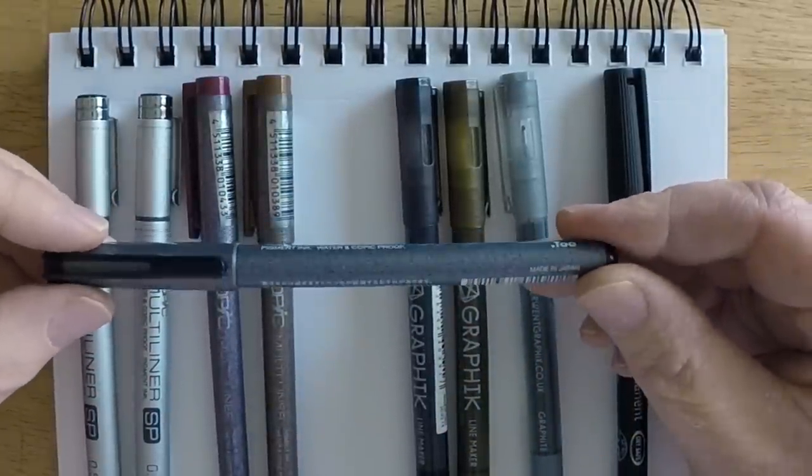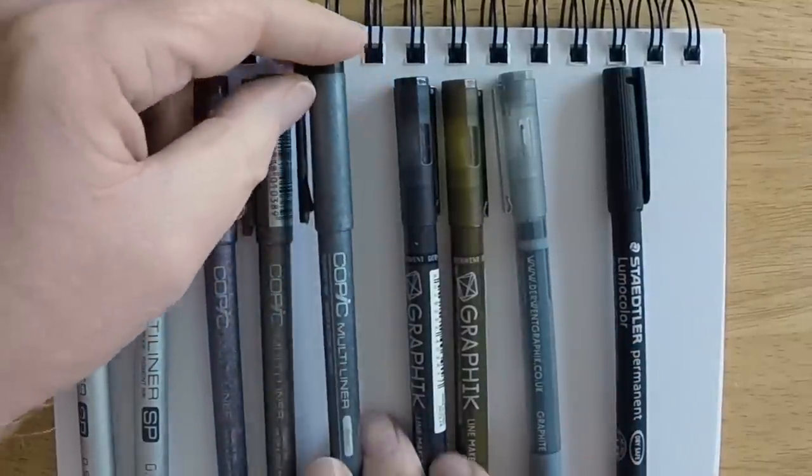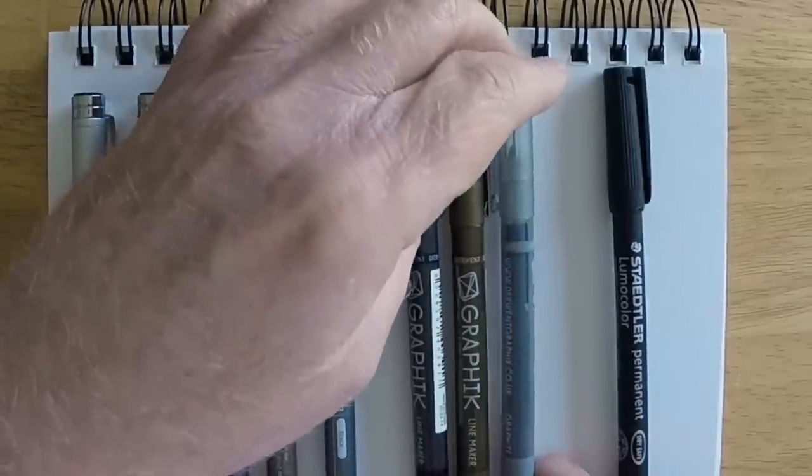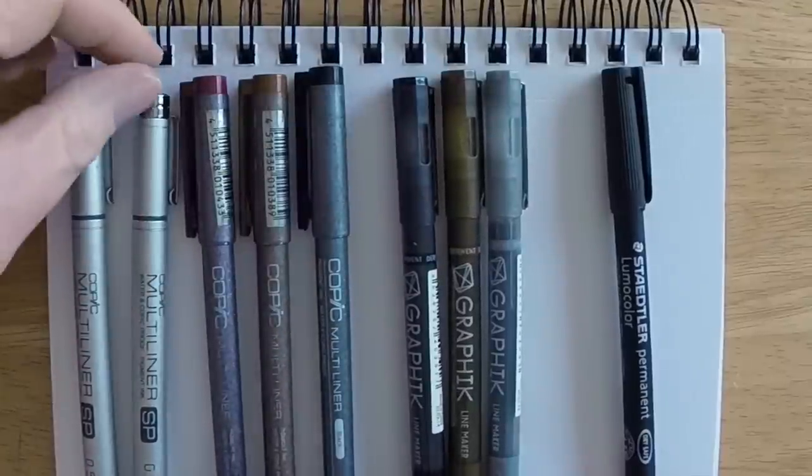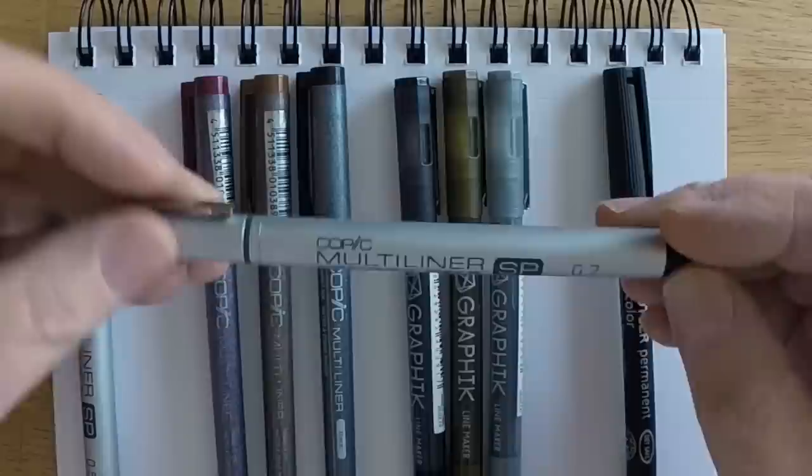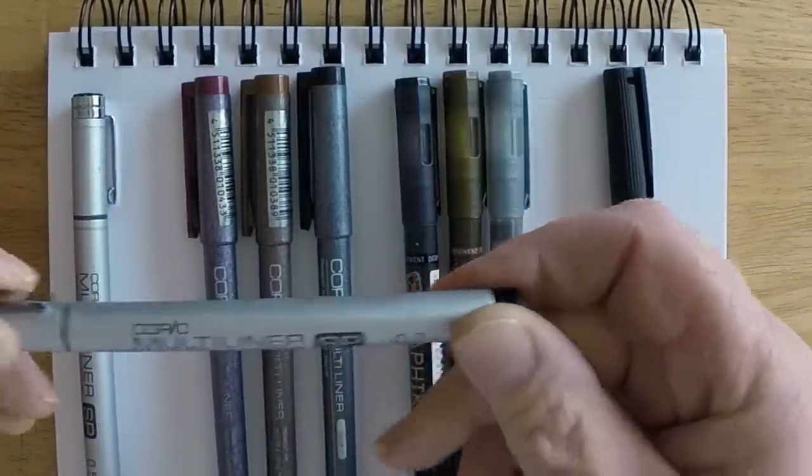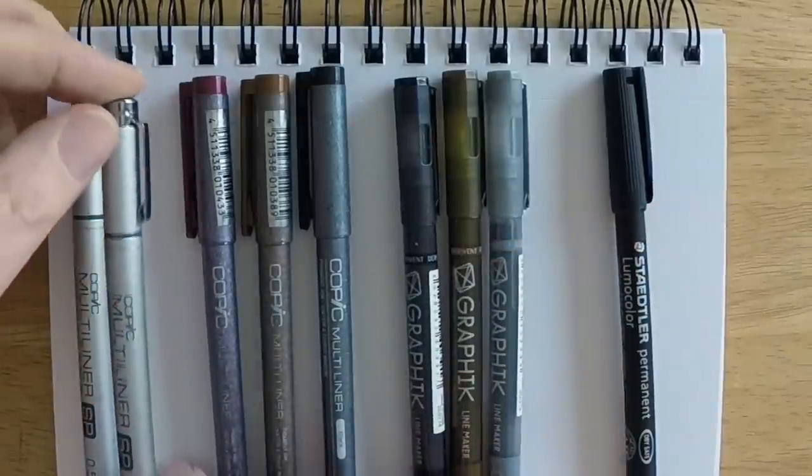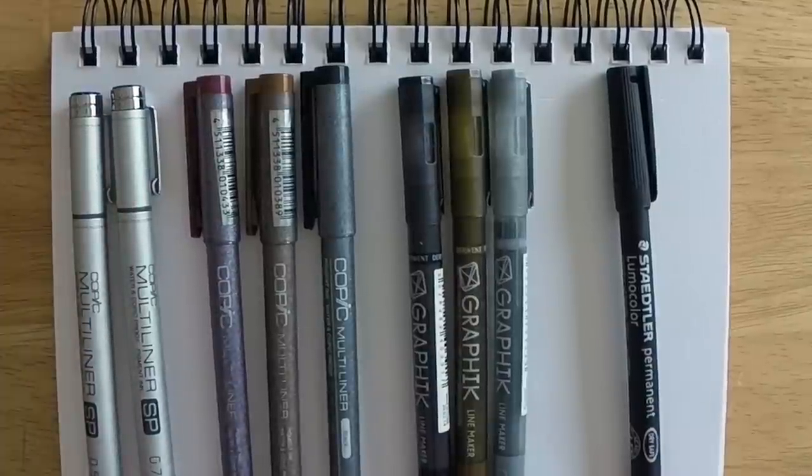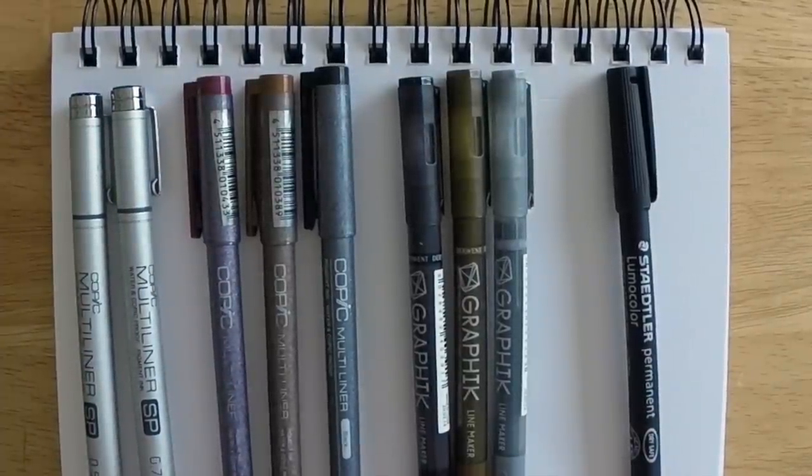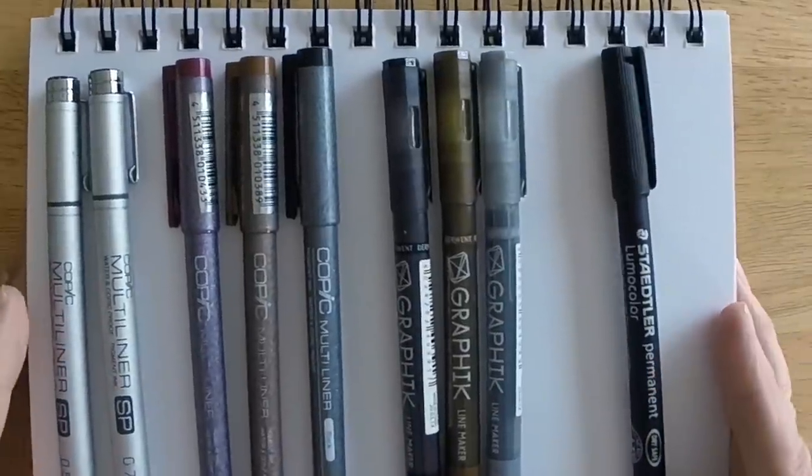The Multiliner, this is a Copic Multiliner made in Japan from Too, is a little bit different from the Copic Multiliner SP edition, which is this aluminum bodied pen. It's got a similar nib, although the pens do perform a bit differently, and we'll get into that detail in just a moment as we take a look at these four different types of artist ink pens.